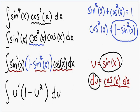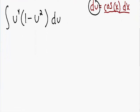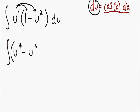This has become a pretty straightforward integral. If we distribute, we distribute u to the 4th with the 1 and the u squared. So the integral becomes u to the 4th times 1, which is u to the 4th, minus u to the 4th times u squared, which is negative u to the 6th, all multiplied by du. Now we are ready to integrate.